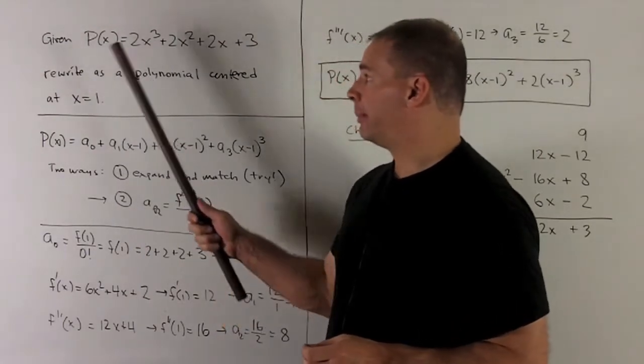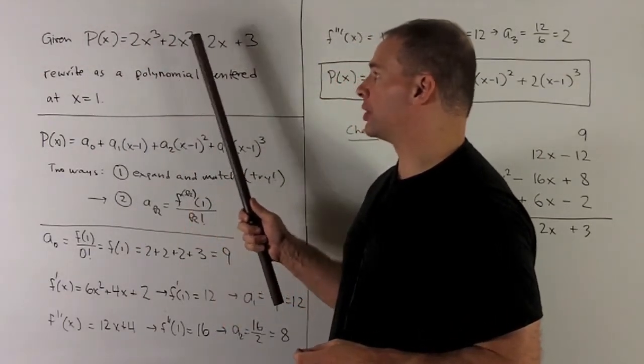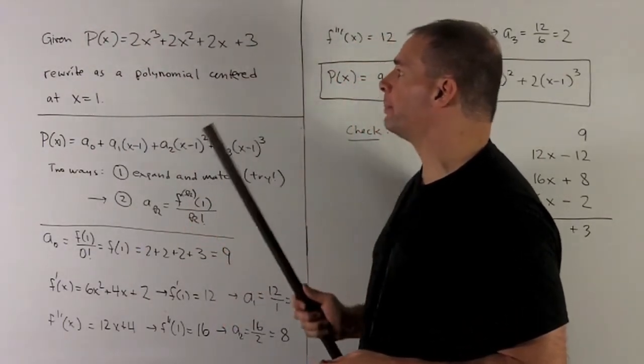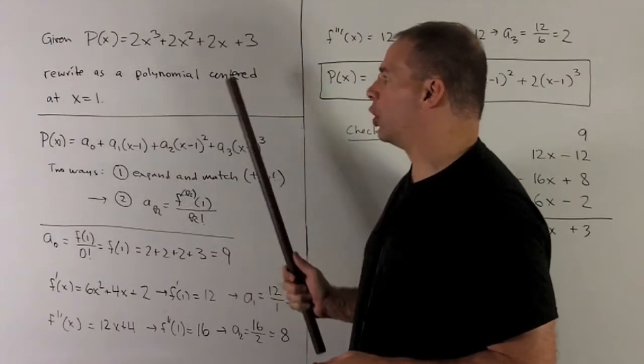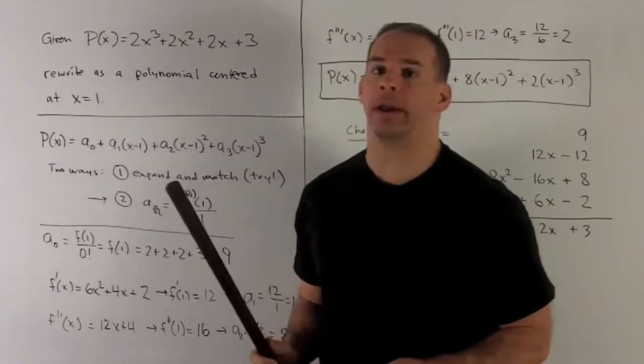Given the polynomial p(x) = 2x³ + 2x² + 2x + 3, rewrite as a polynomial centered at x = 1.